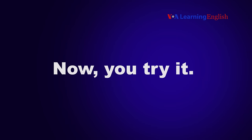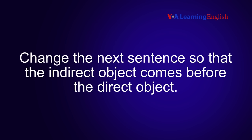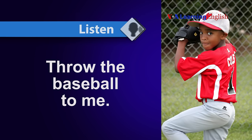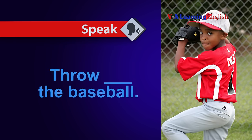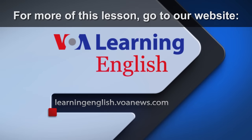Now you try it. Change the next sentence so that the indirect object comes before the direct object. Throw the baseball to me. Answer: Throw me the baseball. We'll be right back.